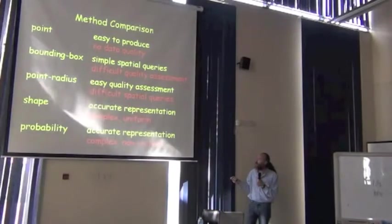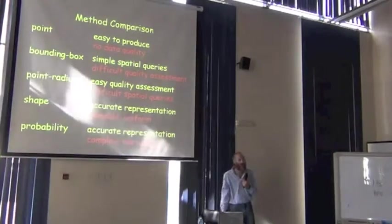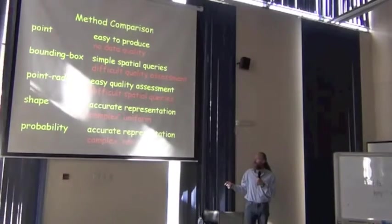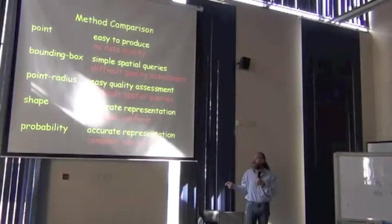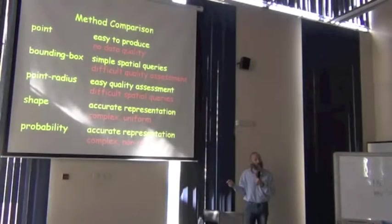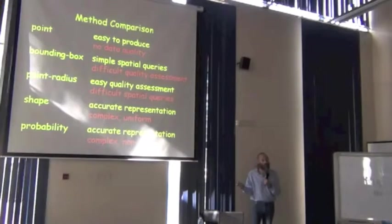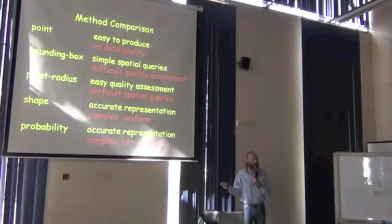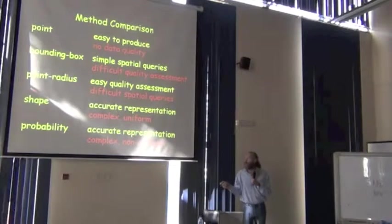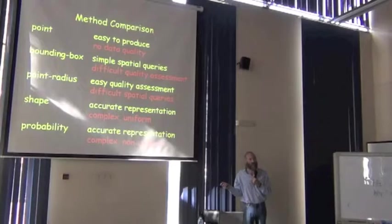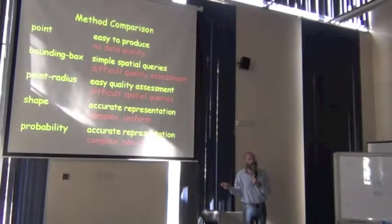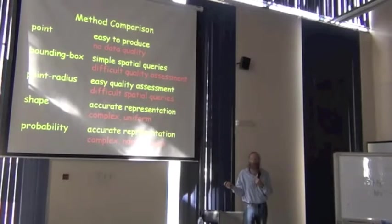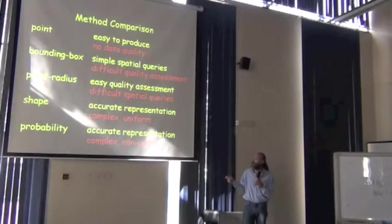Then we have the shape method. We've already said that this is a way to get a quite accurate representation of a place. The problem is, now we're getting into complexities of geometries. We're getting into the realm of acquiring specialized software to be able to know if we're within, how big it is, etc. So the shape method, whereas it's the best, it's not the easiest. It's not even within the realm of possibility in most collections. It's not something that you can do in Excel. Everything about it is impossible to do in Excel.